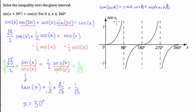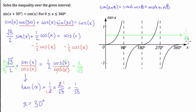We've got the tan of x graph drawn from 0 to 360 degrees. If we draw a horizontal line at 1 over square root 3, on this domain we're going to have a solution at 30 degrees, and another solution between 180 and 270 degrees. This graph tells us whereabouts our solutions lie on the domain — one between 0 and 90, which is x equals 30 degrees, and the other between 180 and 270.